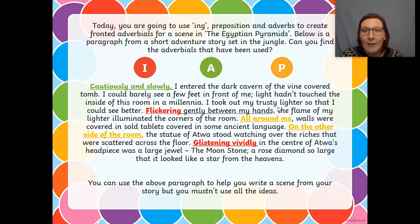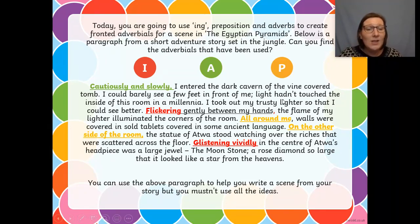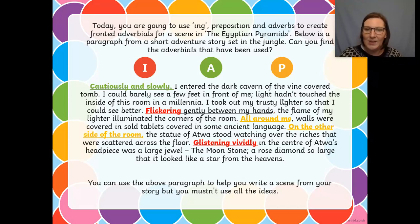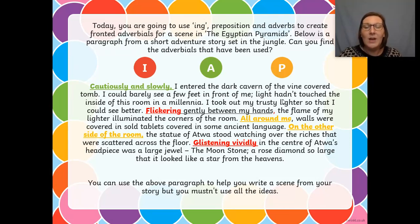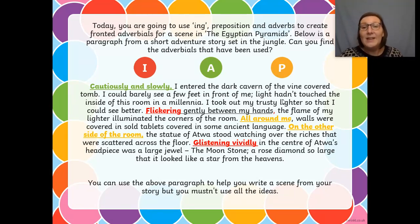All around me, the walls were covered in solid tablets covered in some ancient language. On the other side of the room, the statue of Atwa stood watching over the riches that were scattered across the floor. Glistening vividly in the centre of Atwa's headpiece was a large jewel, a moonstone, a rose diamond so large that it looked like a star from the heavens.